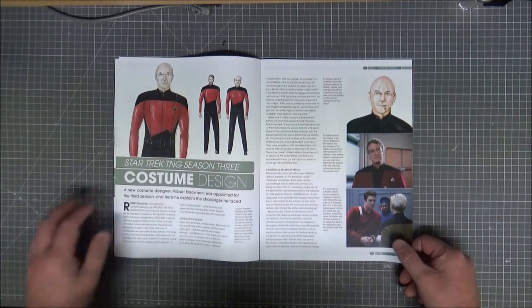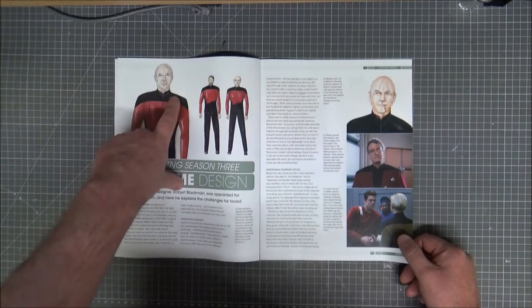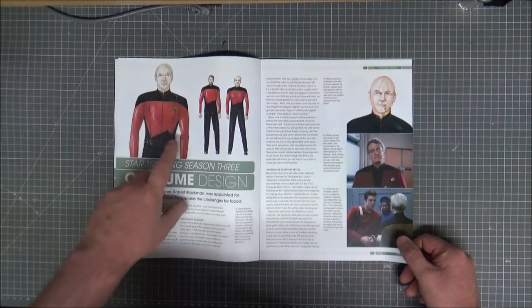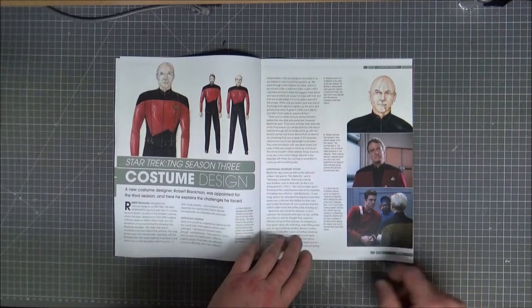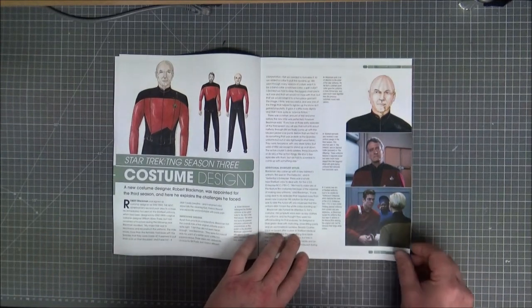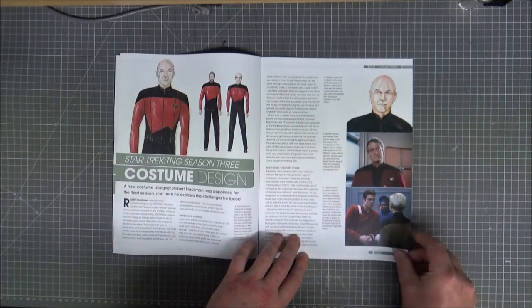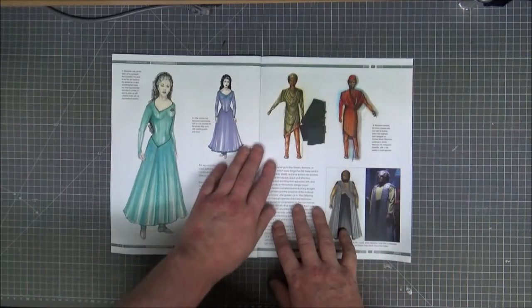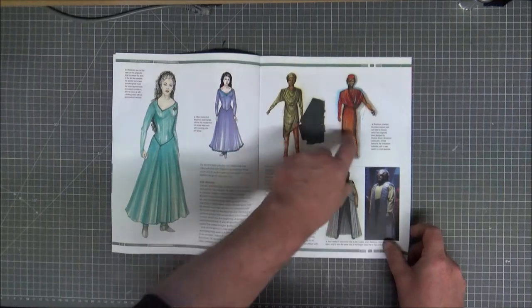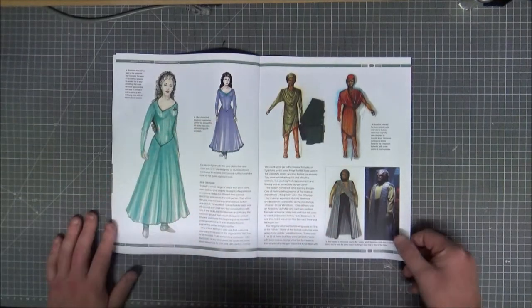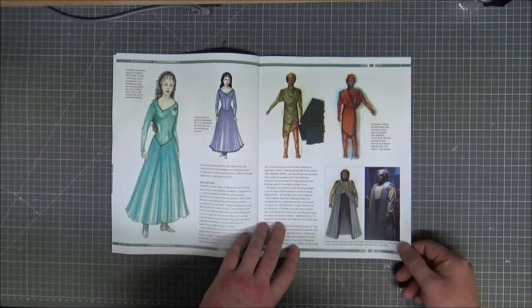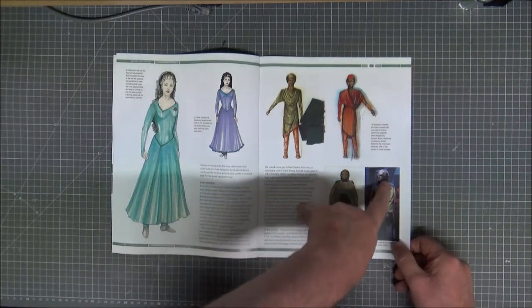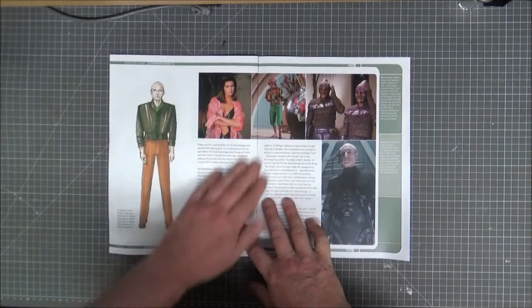So you've got different costume designs. Series 3 brought a bit more of a different costume, more of a uniform tie with a jacket, the collar, less of a jumpsuit. Guinan's uniform became a bit more elaborate. Deanna Troi, a bit more of a dressy uniform, well dress more than uniform to be honest. And Worf showing a lot more of the Klingon side of him.